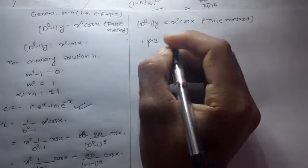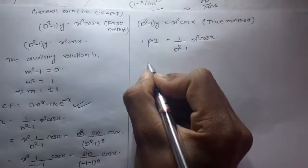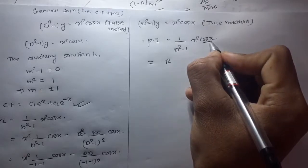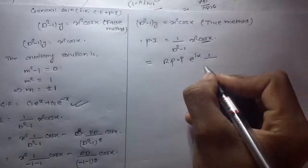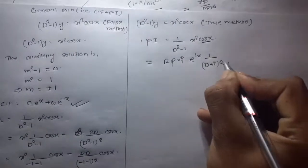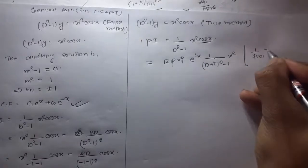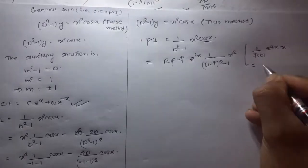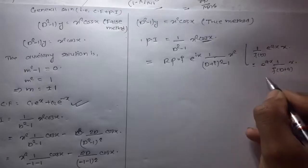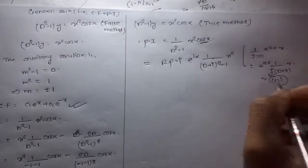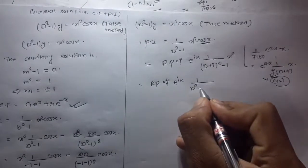For the particular integral, 1/(D² - 1) · x²cos(x): since cos(x) is the real part of e^(ix), this equals the real part of 1/(D² - 1) · x² · e^(ix). We know the formula: 1/f(D) · e^(ax) · v = e^(ax) · 1/f(D + a) · v. Here a = i, so we use this formula and get the real part of e^(ix) · 1/((D + i)² - 1) · x².